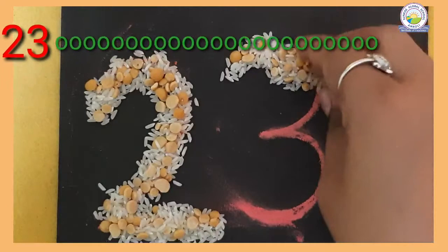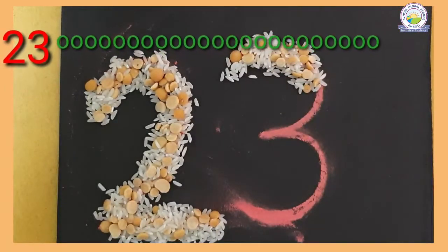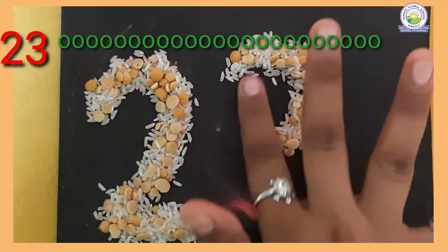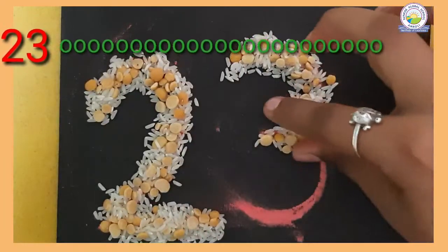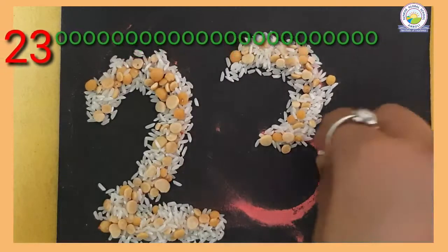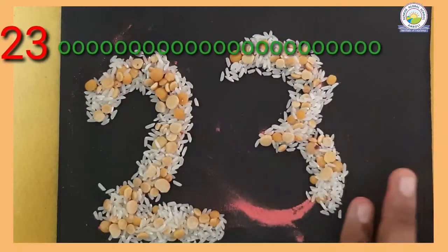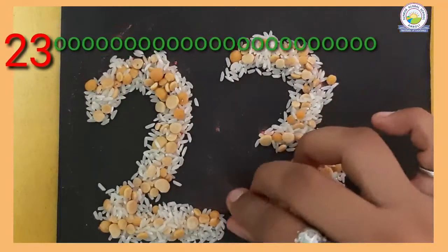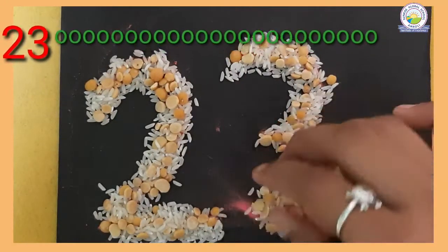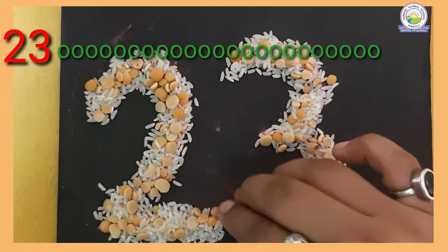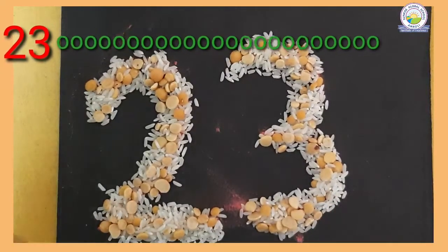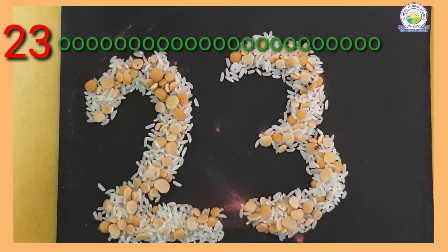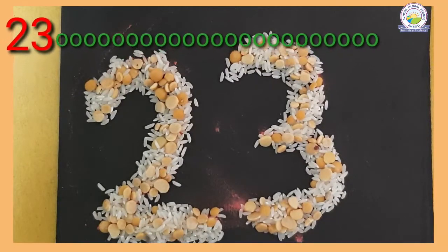So make a half circle. Like this. And then downside half circle. Two half circles make a 3. Number 3. So this is number 23. 2 and 3, number 23.